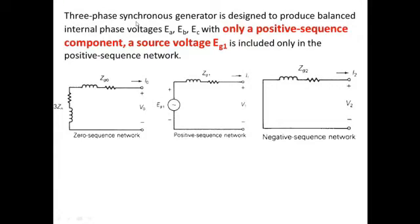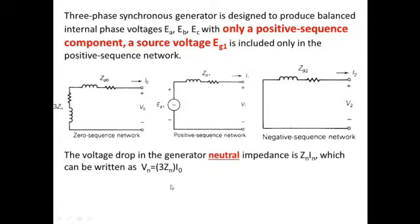A three-phase synchronous generator is designed to produce balanced internal phase voltages Ea, Eb, and Ec with only positive sequence component Eg1. That's why, as it is balanced, we only show the source voltage in the form of Eg1 in the positive sequence network. And similarly, Vn is actually the product of the zero sequence current and the neutral point impedance — the zero sequence current multiplied by 3·Zn.